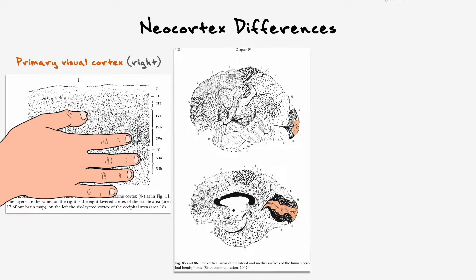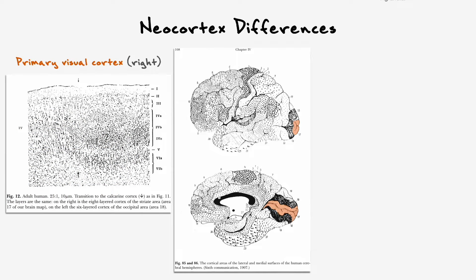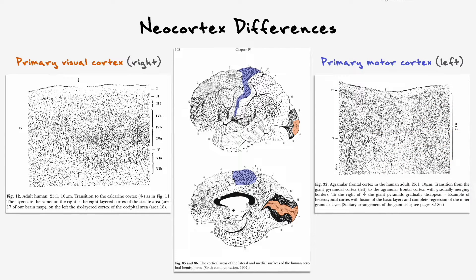If we consider how the neocortical layers in the primary visual cortex or Brodmann area 17 compared to the neocortical layers in the primary motor cortex or Brodmann area 4, you will see that they are strikingly different. The major difference between the two has to do with their layers 4 and 5.